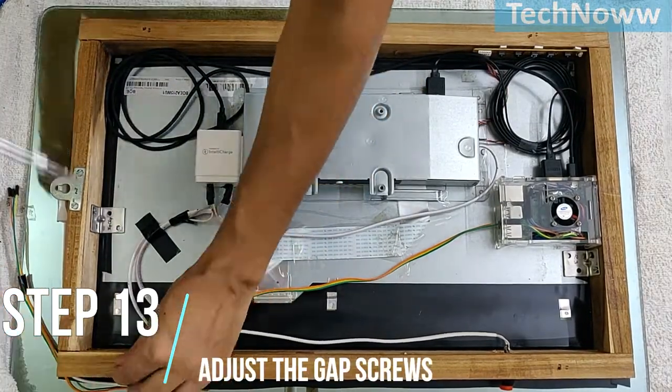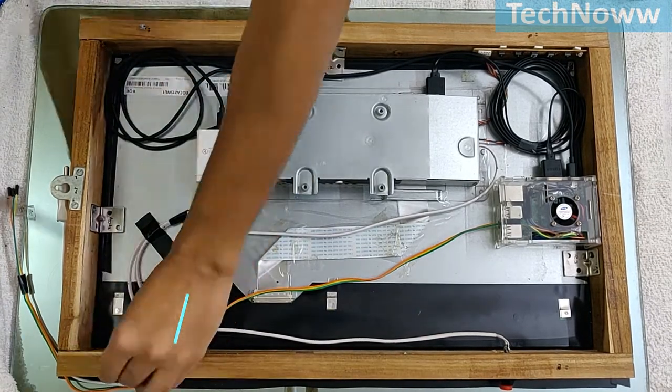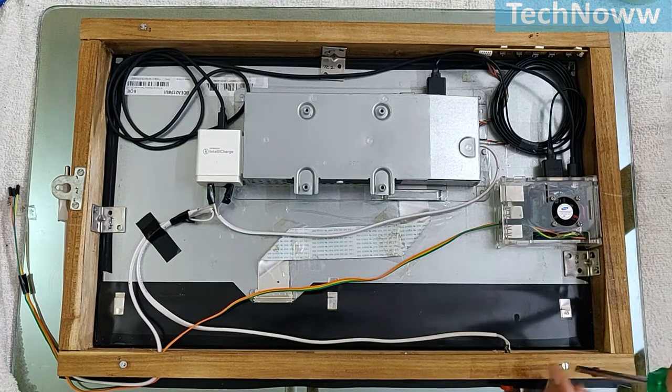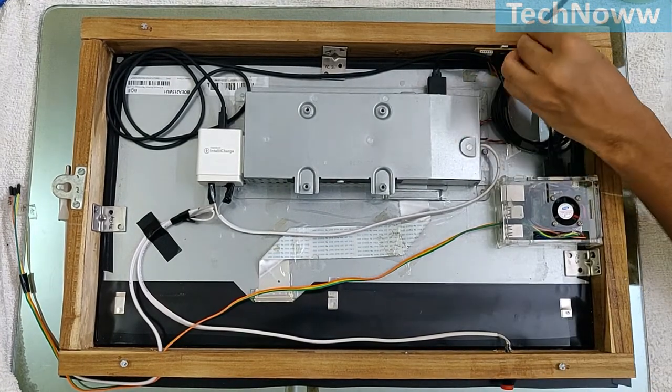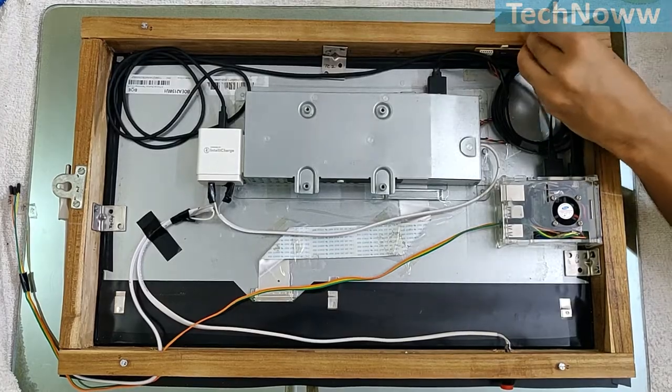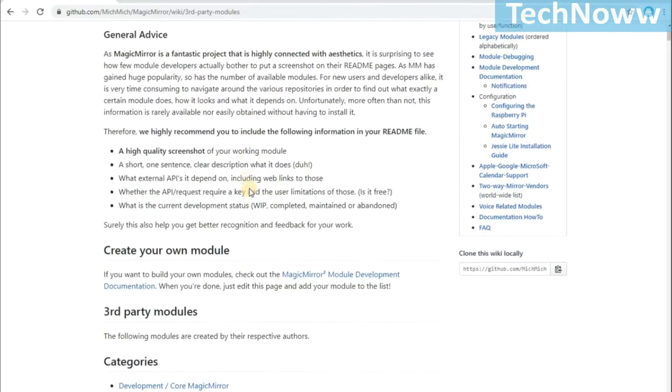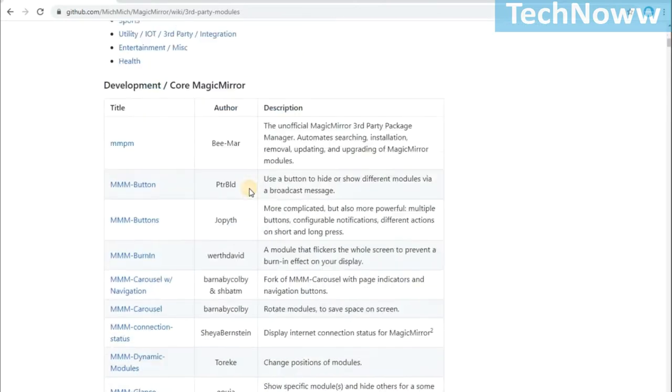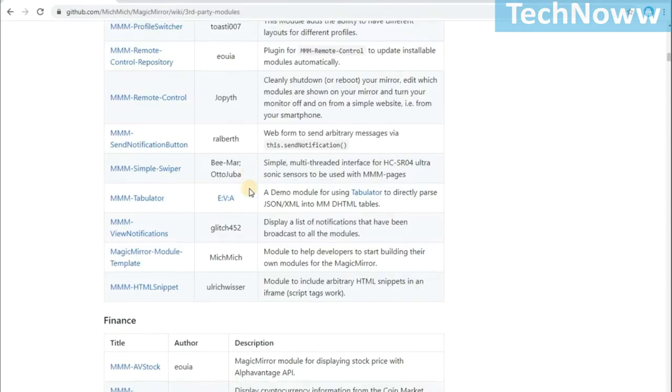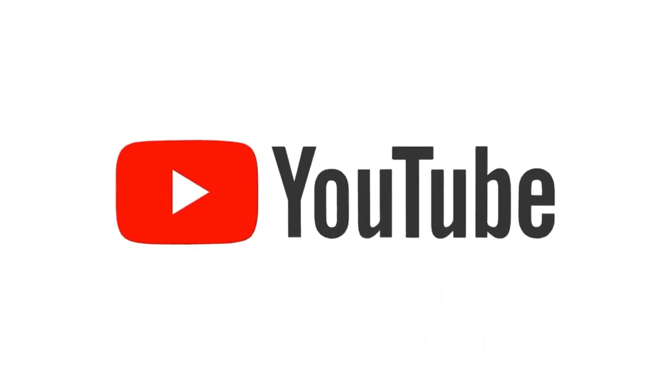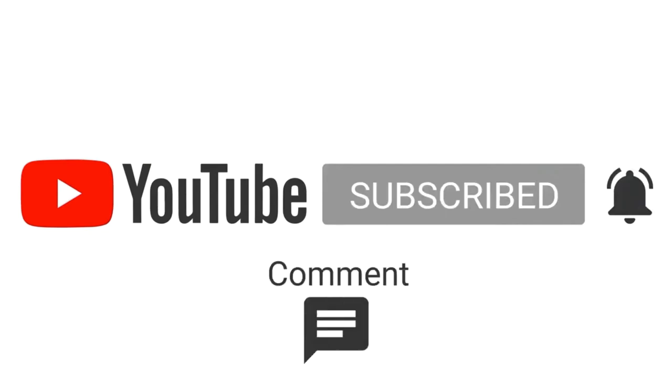Step 13: Adjust the gap screws. Adjust the height of the screws to ensure uniform gap between the frame and the wall. So, our hardware of the frameless Magic Mirror is complete. My next video would be about learning how to install Magic Mirror software and how to configure various modules required for the mirror. Stay tuned for the next video! Thanks for watching! If you like this video, do subscribe and press the notification icon below.